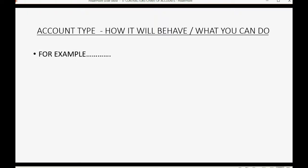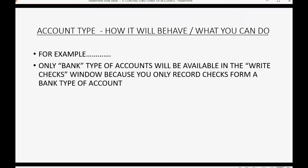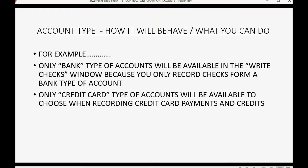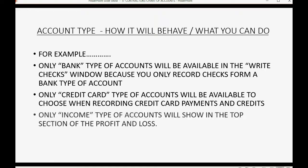Account type explains to QuickBooks how the account will behave or what you can do with it. For example, only bank type accounts will be available in the write checks window. Only credit card type accounts will be available when recording credit card payments. Only income type accounts will show up at the top section of the profit and loss to show your total income, and expense type accounts will show up at the bottom to show what you spent.